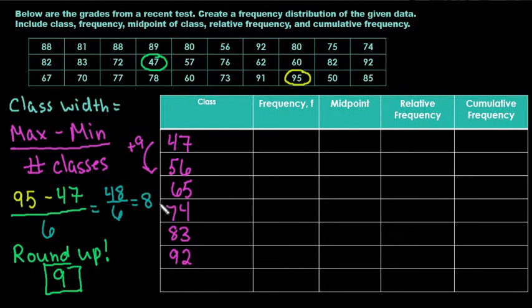Had we counted by 8, our last class width would have just missed the 95. So we would have just missed the 95 and then you wouldn't have all of your values. So no matter what, always round up your class width. So these are what are known as our lower limits. This is our lowest value of our class. And then we need to find our upper limit.